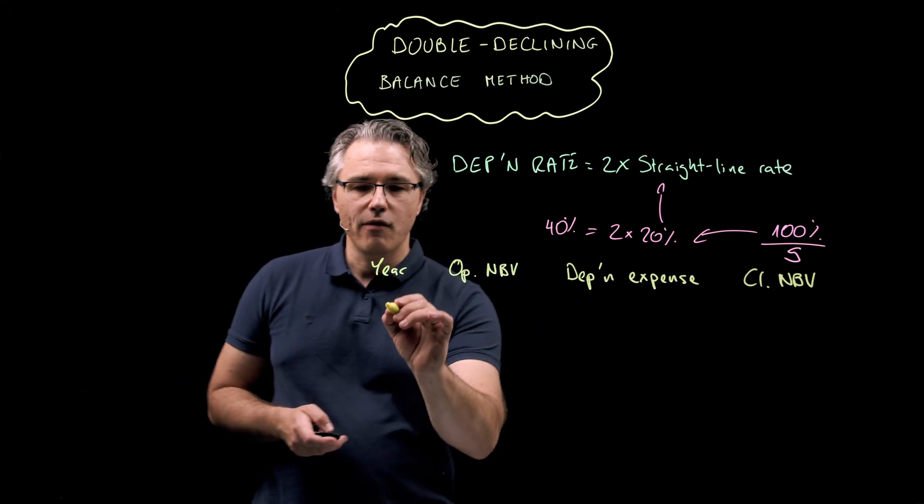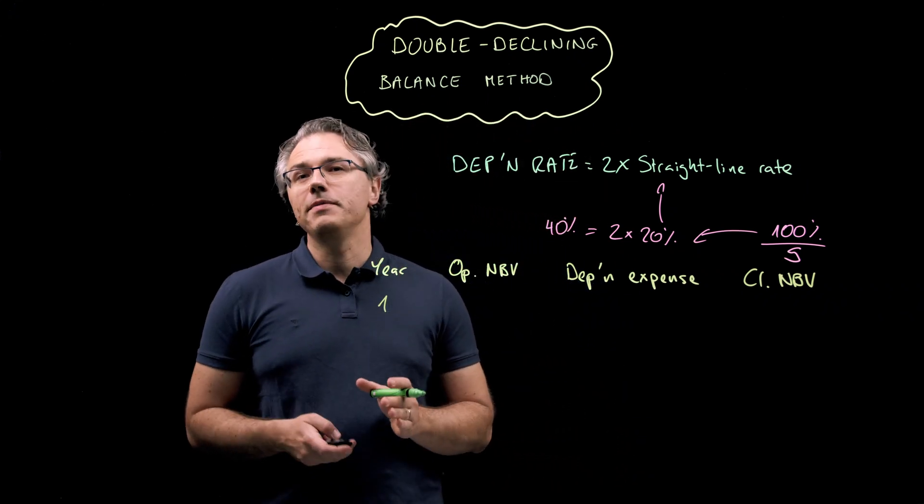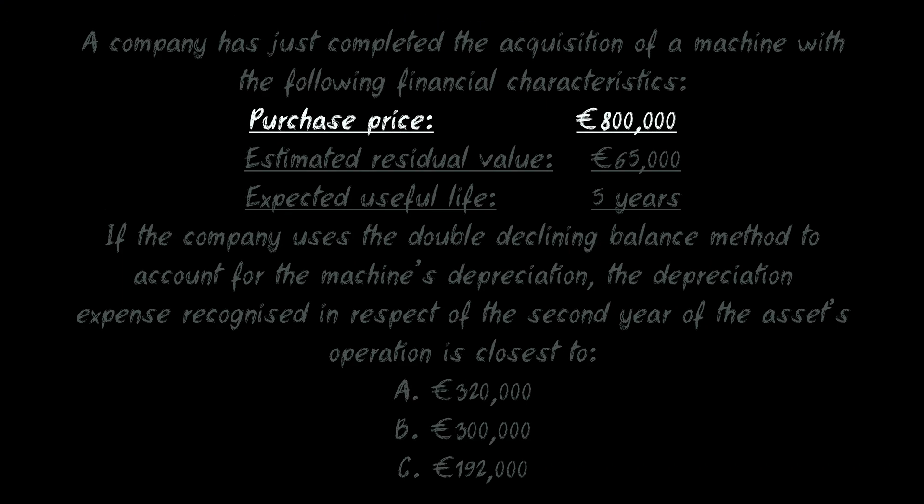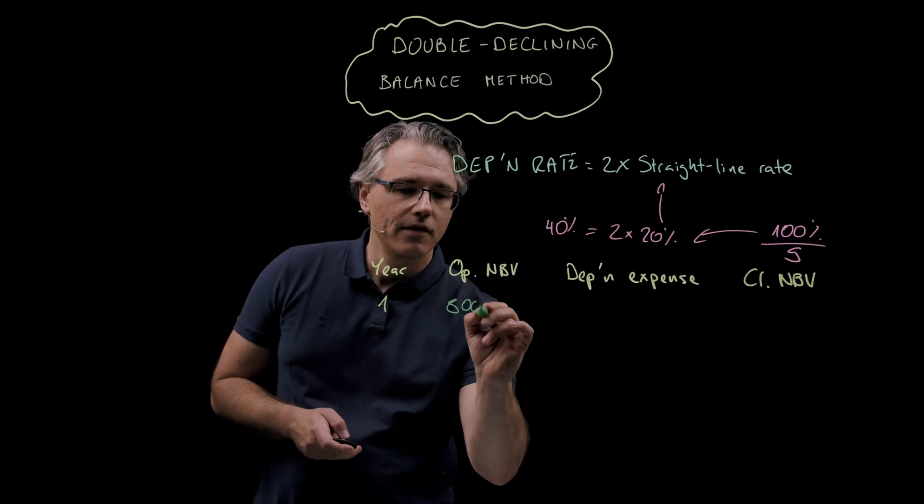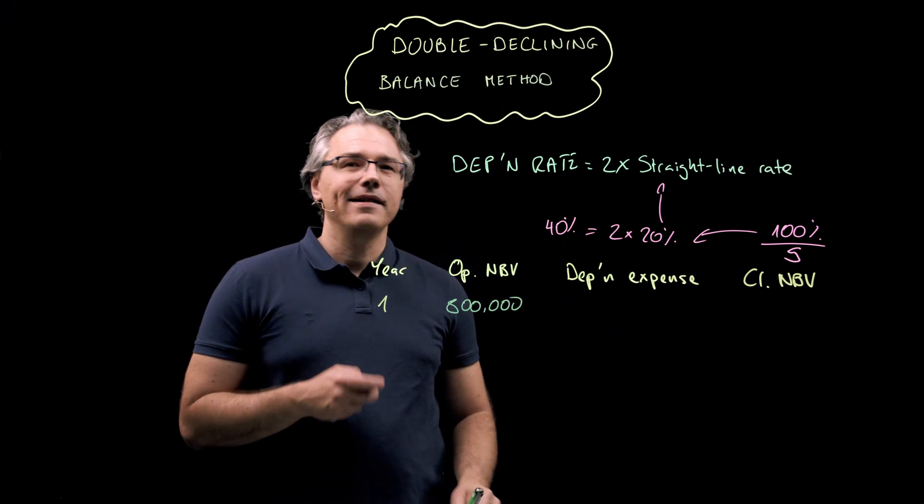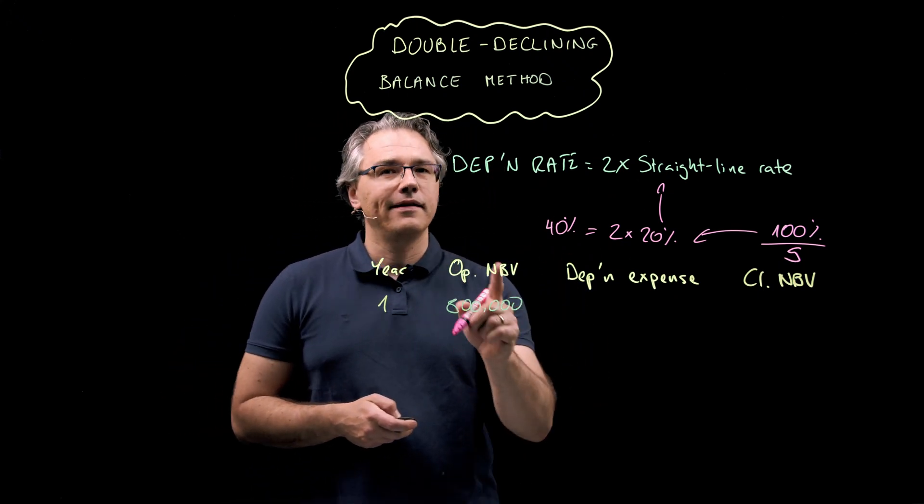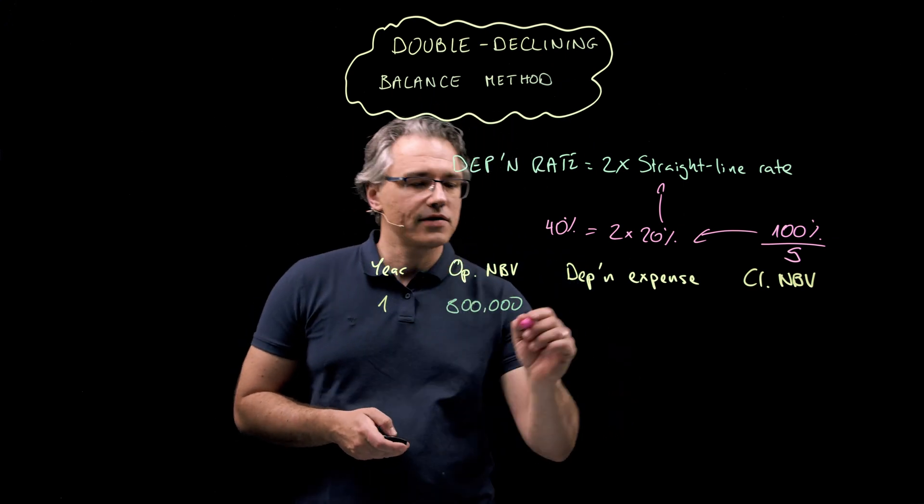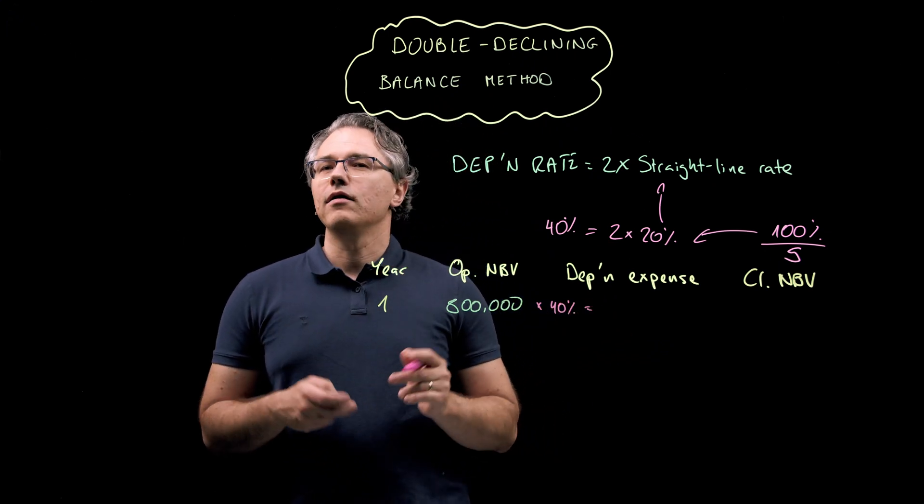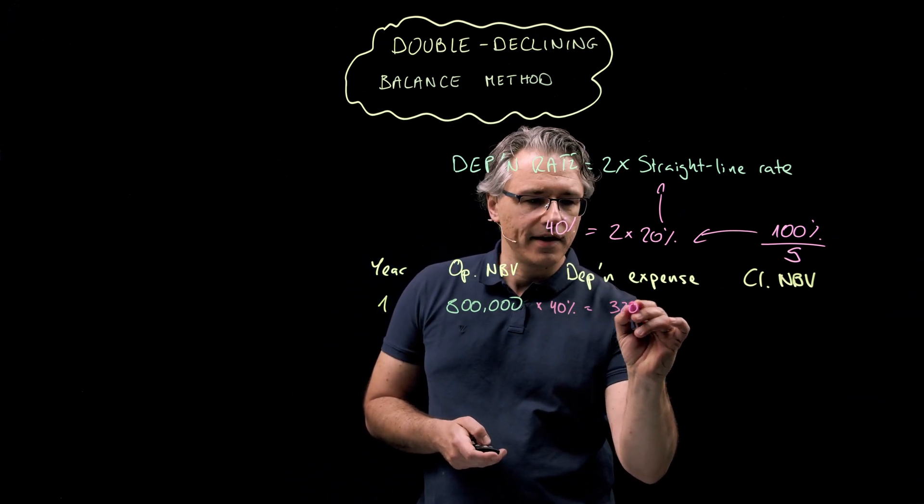Starting with year one, our opening NBV here is going to naturally be the asset's original purchase price. Let's check what that was in the question. Here it is. So, €800,000. And we now apply this double declining balance rate of 40%. And we apply it to this opening NBV. So, times 40% to get the depreciation expense for the year.